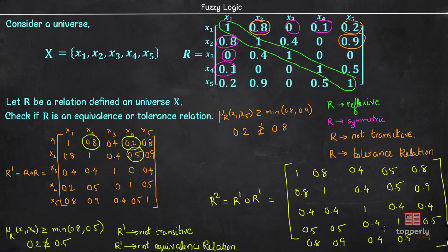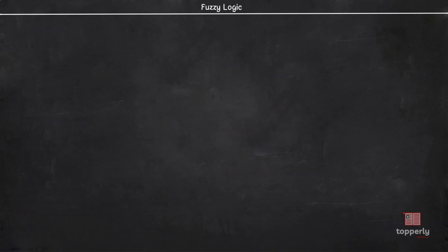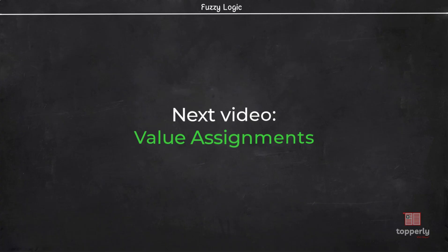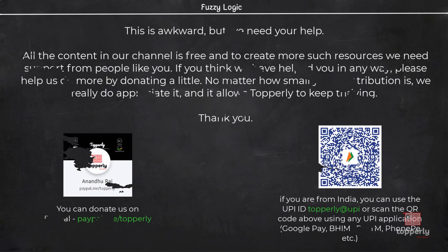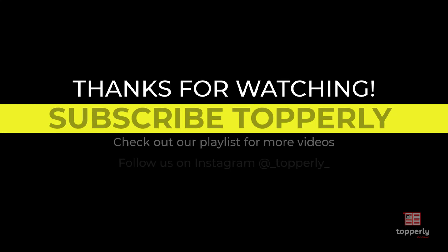I hope you now understand how to reform a tolerance relation into an equivalence relation by performing composition on itself. That's all for this lecture. To summarize, we learned about reflexive, symmetric, and transitive properties in the case of crisp and fuzzy relations. We also saw the definition of equivalence and tolerance relation in both cases. In the next video, we will learn about value assignments. If you have any doubts, feel free to ask them in the comments — either me or some other viewer will surely help you out. If you found this lecture useful, please like the video and subscribe to the channel. Thank you for watching and have a great day.